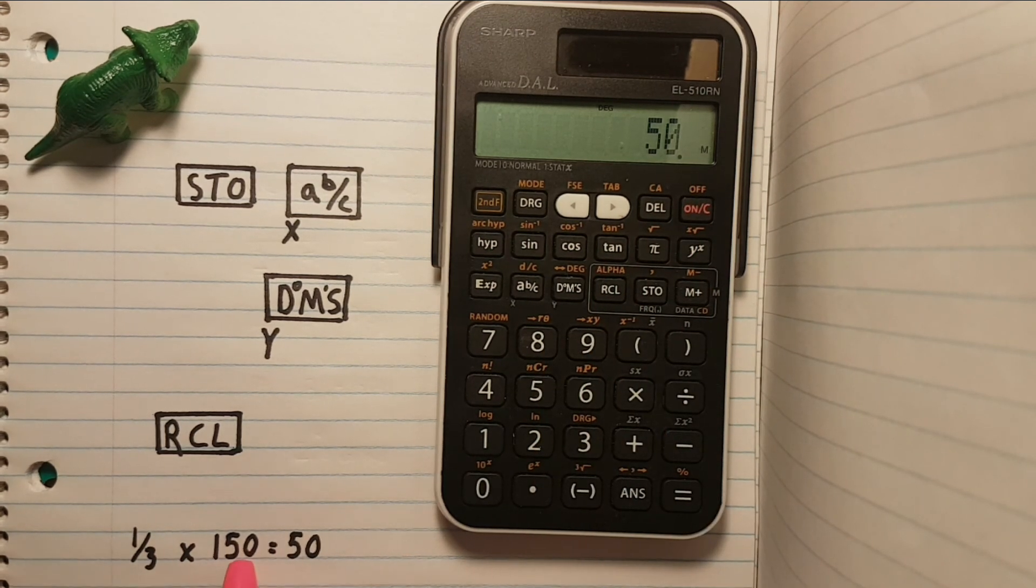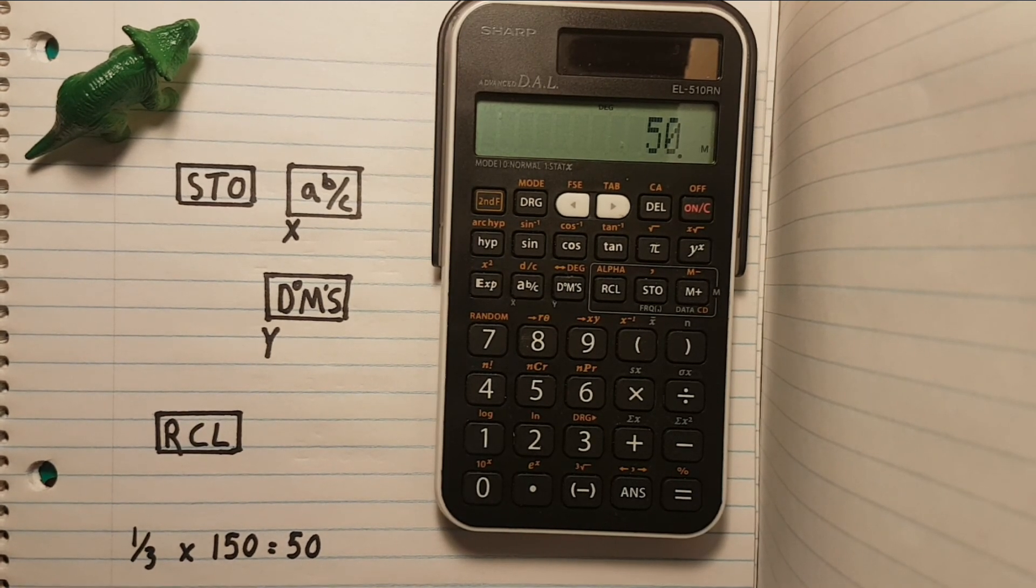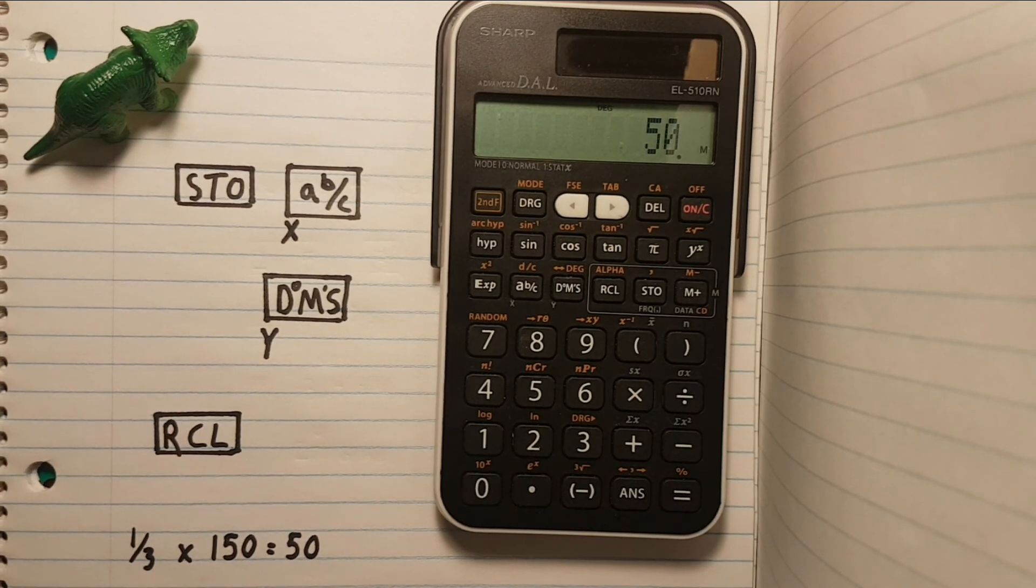One-third of 150 equals 50. All right, I hope this helps and good luck on those tests.